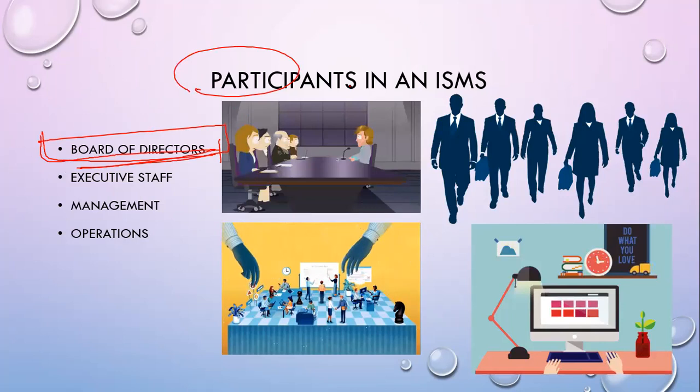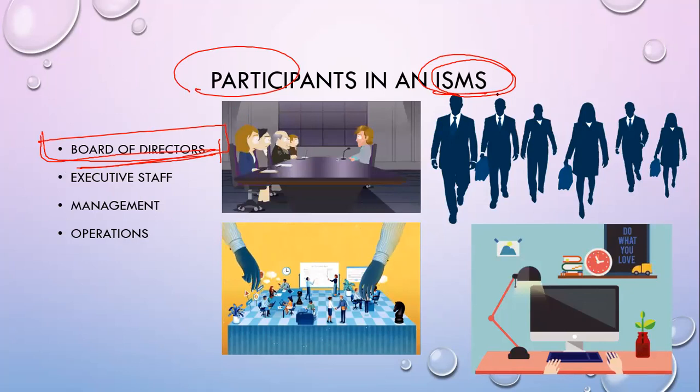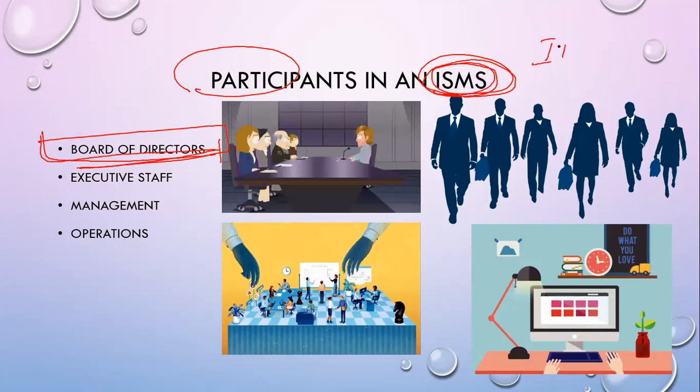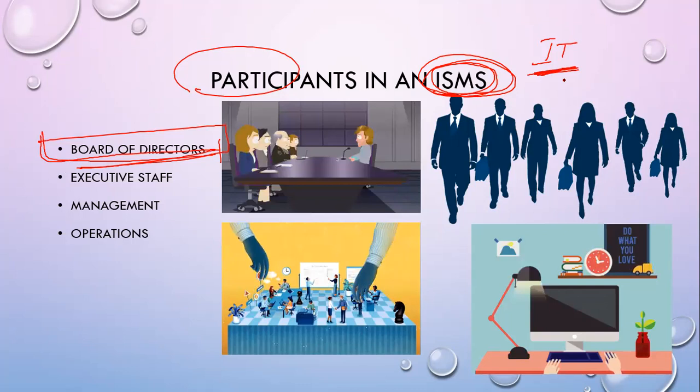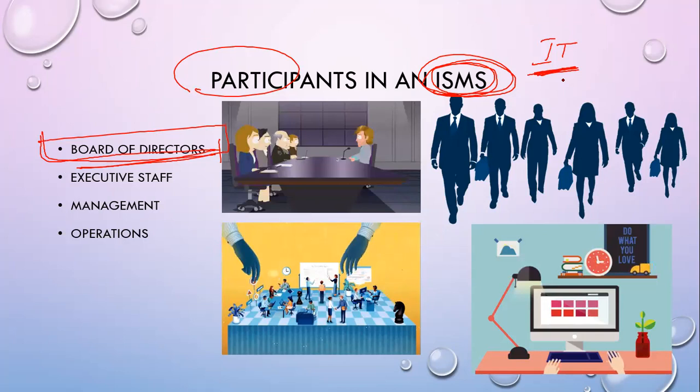Your senior executive or executive staff are typically the owners of the program. For example, your IT manager — they are number one in controlling your ISMS and managing the system. The management system will enhance an organization's horizontal and vertical integration and visibility through your executive staff.